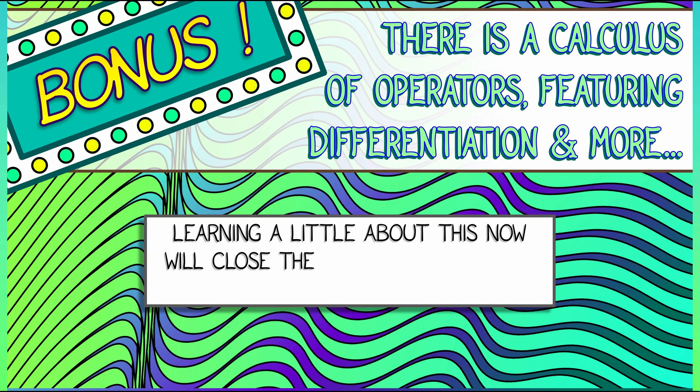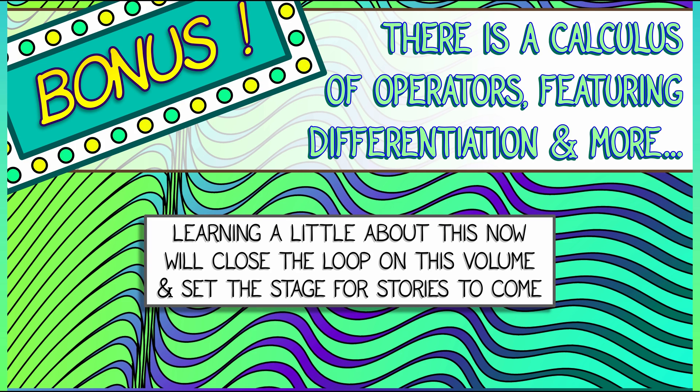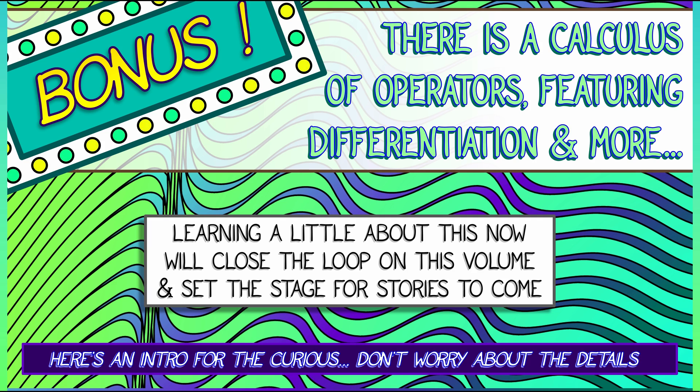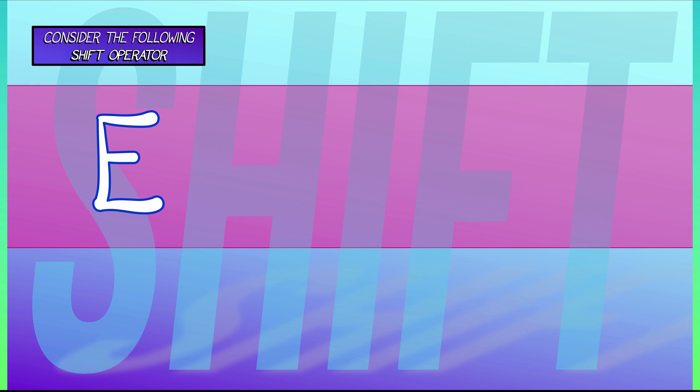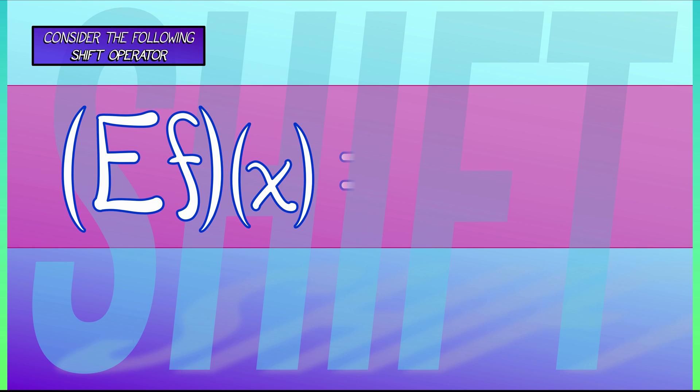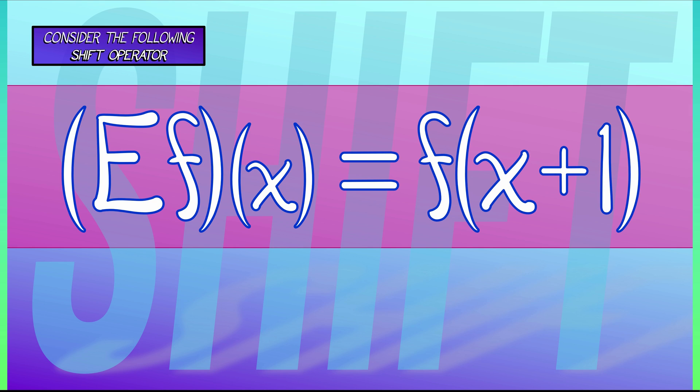Let's do a real quick intro on this just to close the loop on this volume, set the stage for some of the things that we're going to do towards the end of Calculus. Here's an intro—don't worry about the details, the specifics, this is really just for fun. Consider the following shift operator, this is a new one for us. This goes by capital E. The shift operator E applied to a function f and evaluated at an input x is defined to be f evaluated at x plus one.